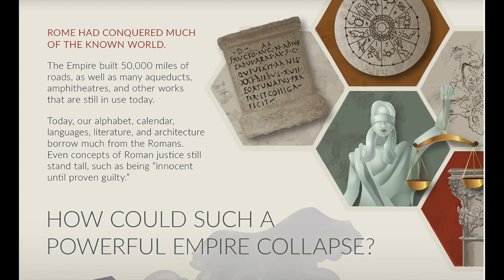Rome had conquered much of the known world. The empire built 50,000 miles of roads as well as many aqueducts, amphitheaters, and other works that are still in use today. Our alphabet, calendar, languages, literature, and architecture borrow much from the Romans. Even concepts of Roman justice still stand tall, such as being innocent until proven guilty. How could such a powerful empire collapse? Look at Washington D.C. — our architecture looks like a mini-Rome in many aspects.